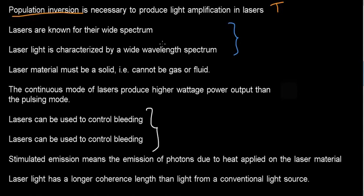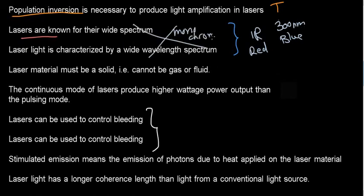And now I want to read these two in concession because they're essentially the same. Lasers are known for their wide spectrum, and laser light is characterized by a wide wavelength spectrum. But what you need to keep in mind is that a blue laser will always be blue. A 300 nanometer light laser is always going to be at this wavelength. It's not going to have a spectrum. It's going to be monochromatic. So these two would be false.